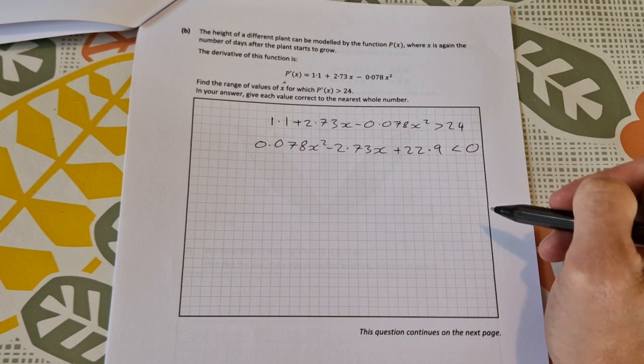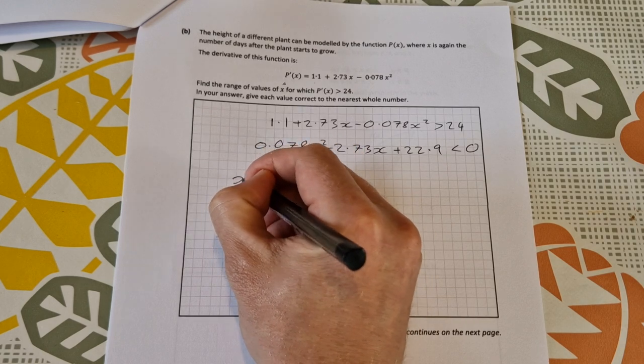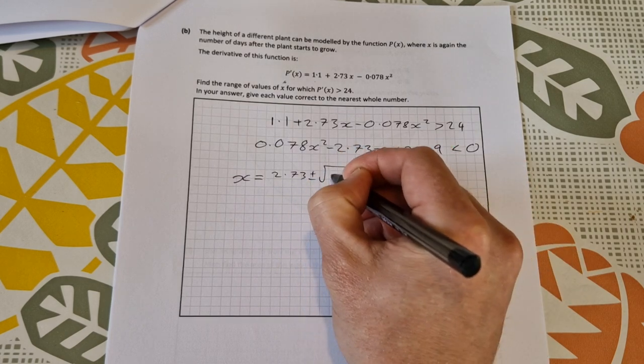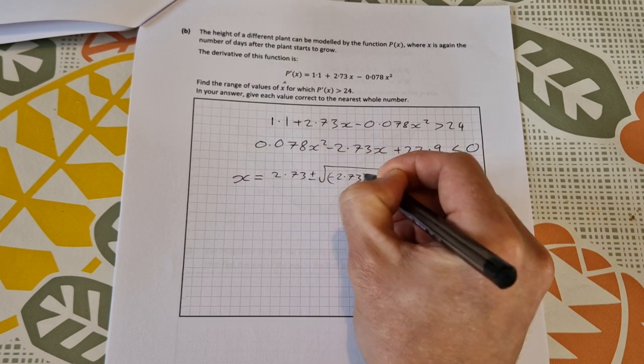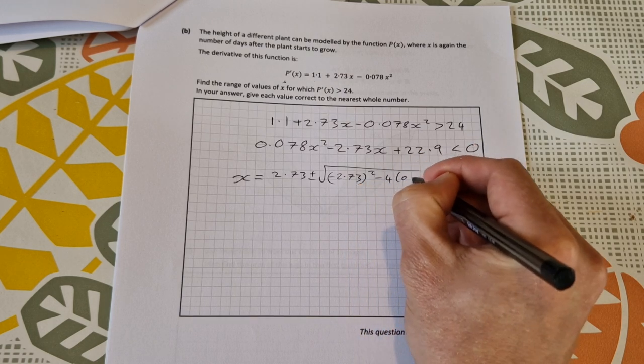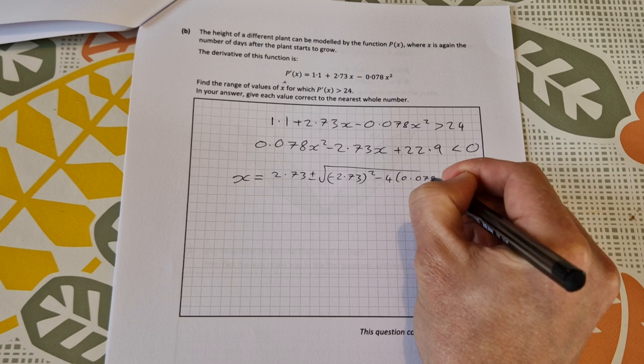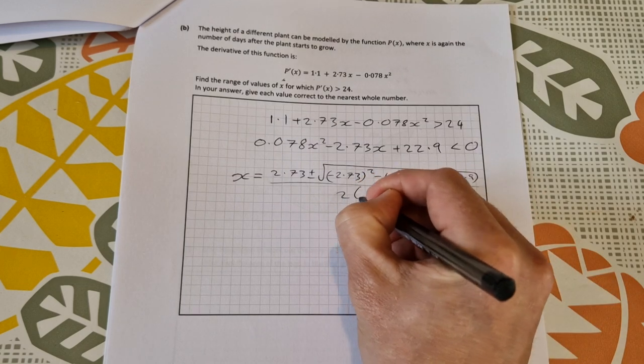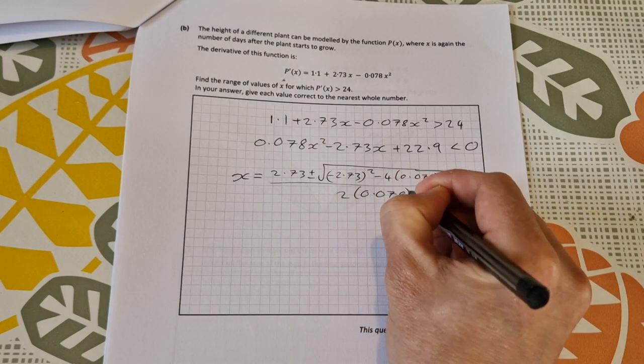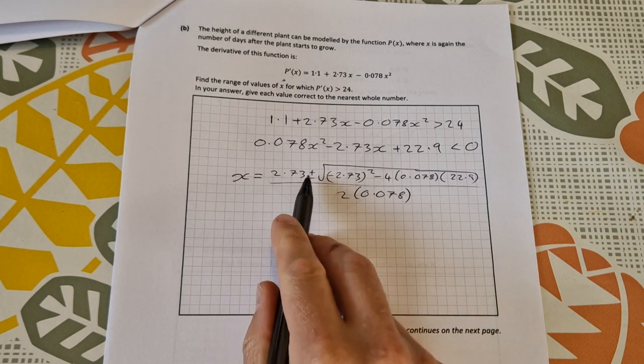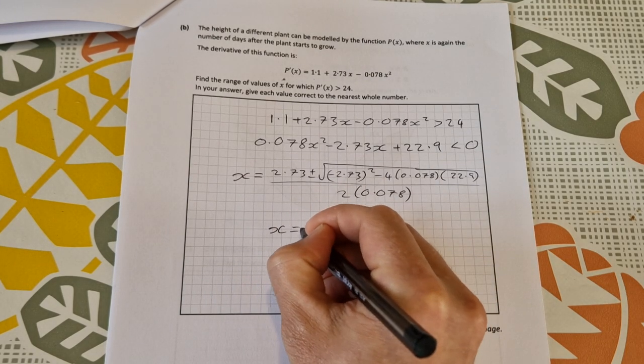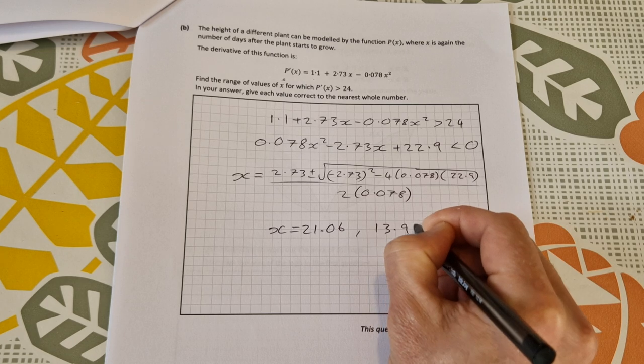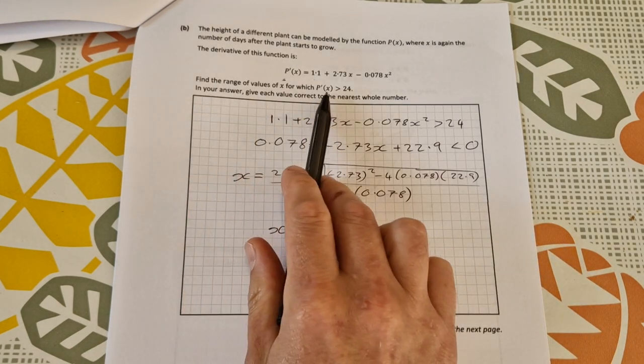It's a quadratic with some decimals as coefficients, so we're going to use the quadratic formula. x equals minus b, so that's 2.73, plus and minus the square root of b squared, so minus 2.73 squared, minus 4ac, so a is 0.078 and c is 22.9, all over 2a, so that's 2 times 0.078. Using your quadratic formula, pop that into the calculator first with the plus then with the minus. You'll get x equals 21.06 or x equals 13.94.